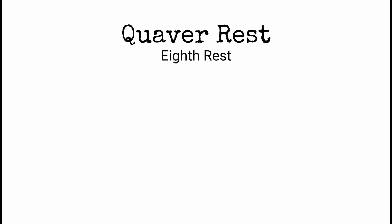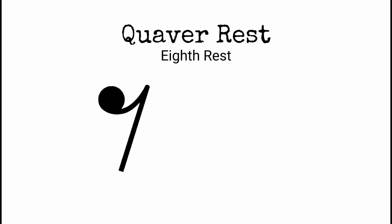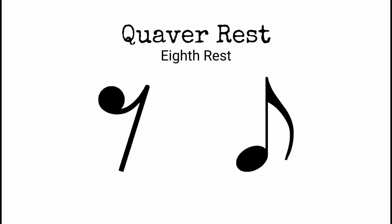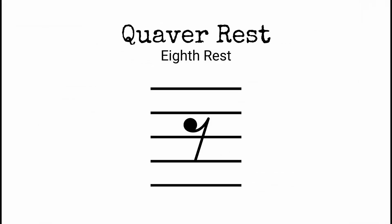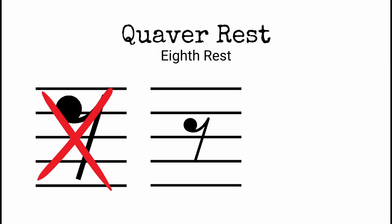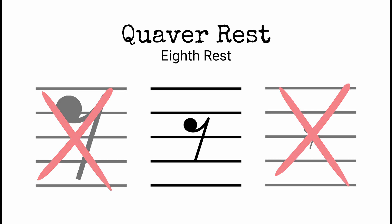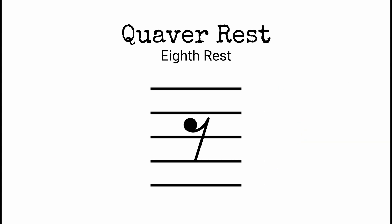A quaver rest, also known as an eighth rest, is a symbol that looks very much like the number seven with a little blob on the end. It tells us to be silent for half a beat. Again, don't make the quaver rest too big or small. It should sit in the middle of the stave with the little blob sitting neatly in the third space from the bottom.